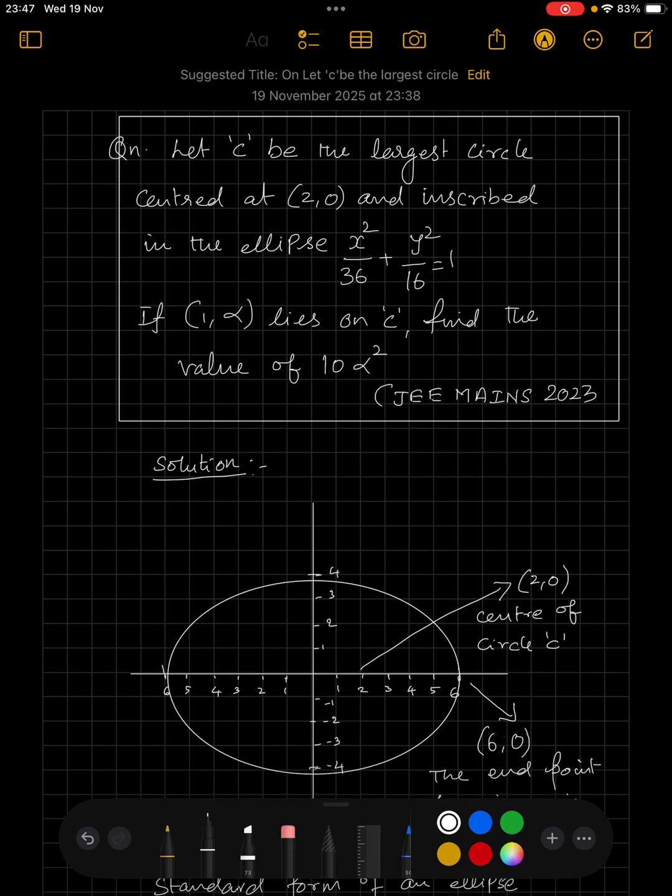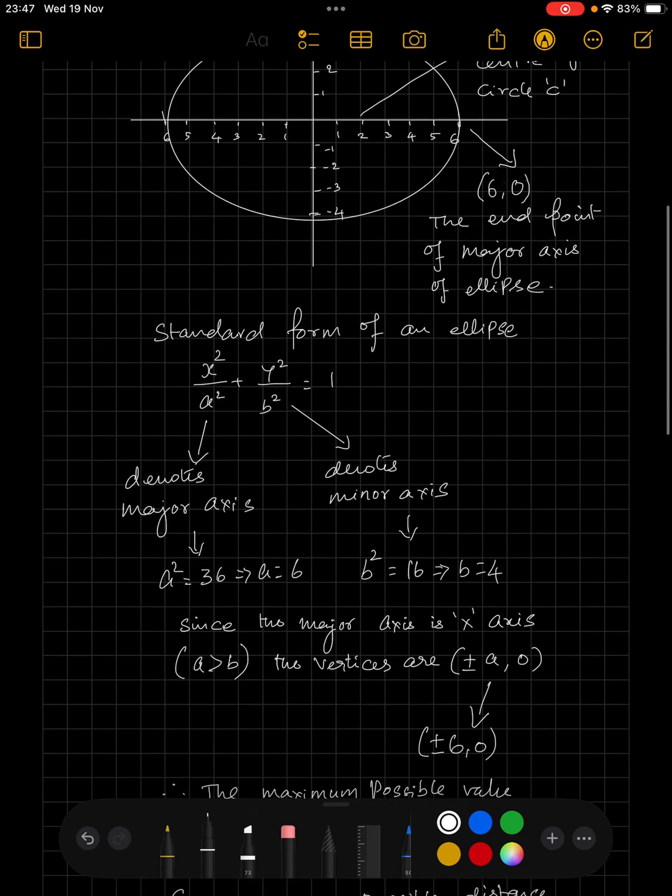An ellipse of standard form of equation x square by a square plus y square by b square is equal to 1 is given. Let us have a recap of this.